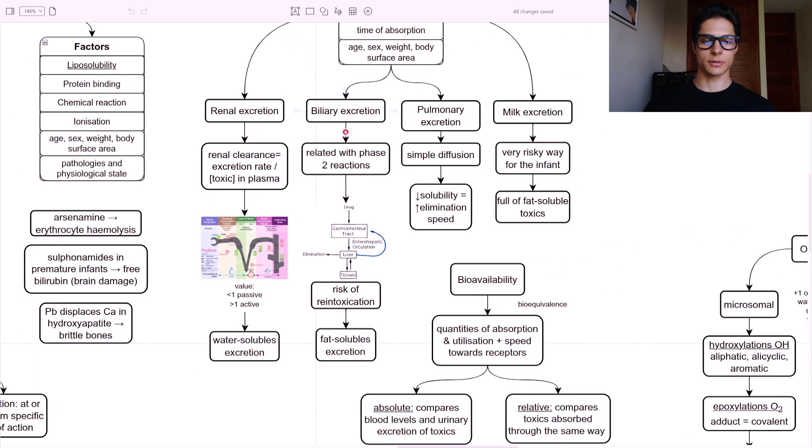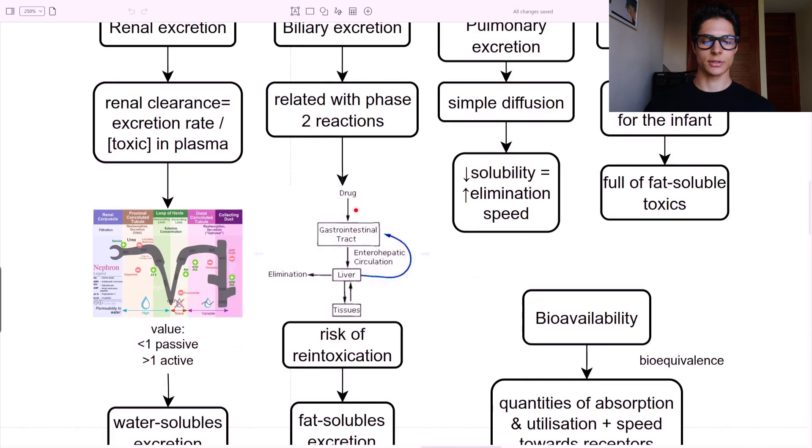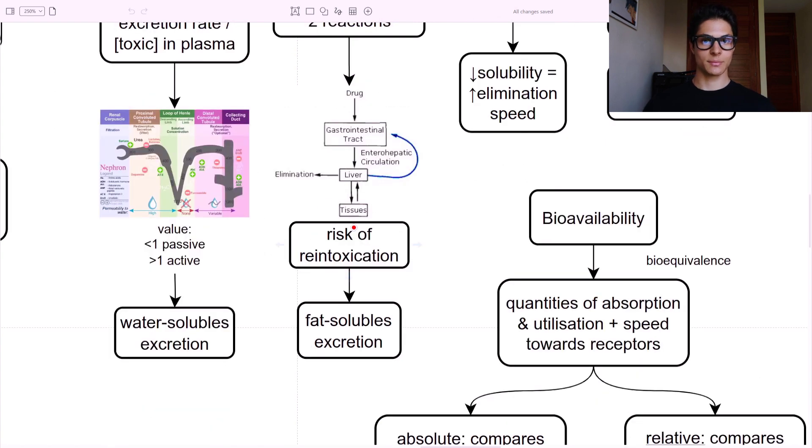Then biliary excretion. It is related with phase two reactions. We have the drug that enters the gastrointestinal tract, goes to the liver, and through the enterohepatic cycle, it gets back to the intestinal tract. Because of this mechanism, we can have a risk of reintoxication. And here we get rid of the fat-soluble toxins.